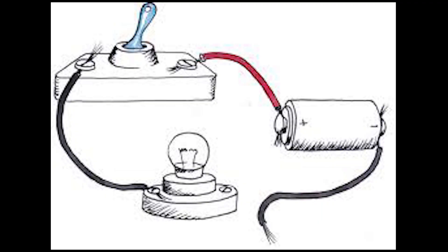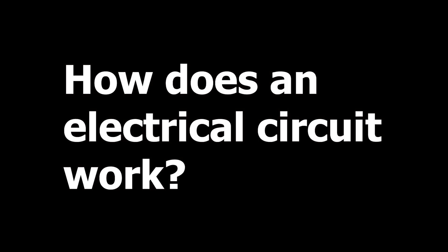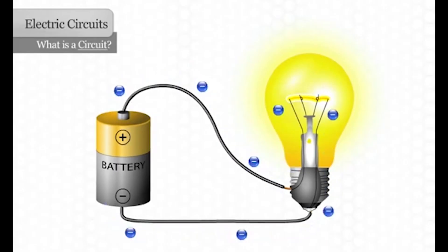My experiment is an electrical circuit. An electrical circuit is a road through which electrical current can flow. Current is a measure of how much electrical charge flows through a circuit. An electrical circuit is just like a way to transfer electric current from point A to point B.